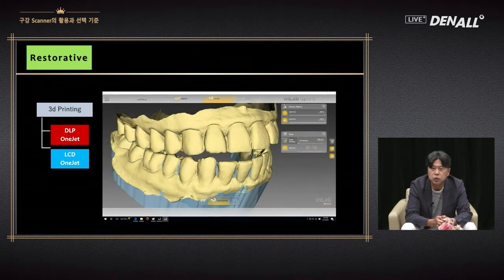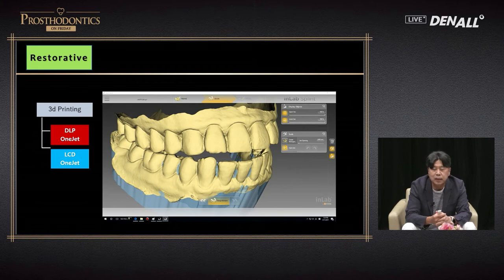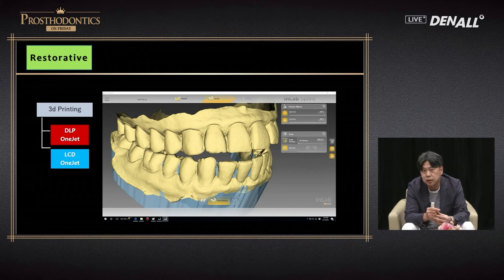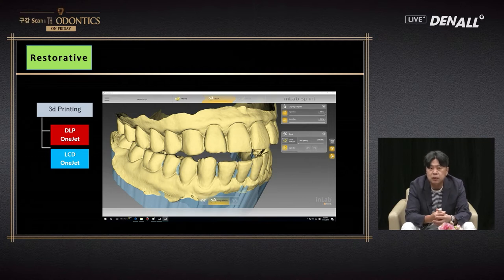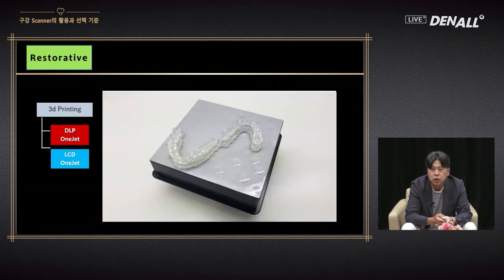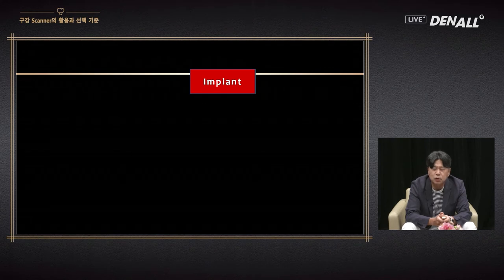Splint fabrication is made very easy using digital technology. Full arch impression taking is difficult and bite registration is really challenging. Using digital technology, it is easy to control patient movement and easily acquire the centric occlusion of a patient. You don't need to use media in the middle to acquire them, so confirmation is facilitated, the design is easy to make, and it can be printed — a splint can be fabricated rather easily.